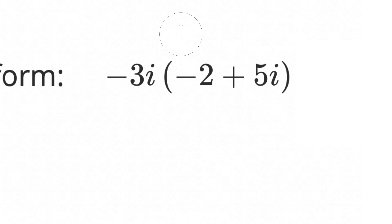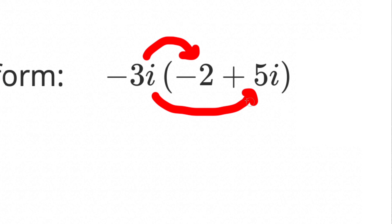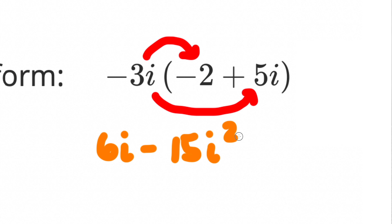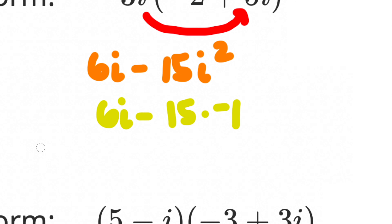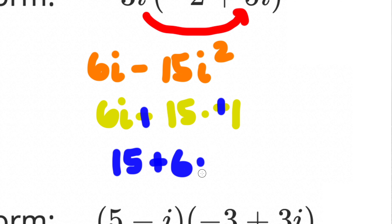The next example involves distributive property, which works the same way for imaginary numbers. Distributing -3i over (5 + 2i) gives -15i - 6i²... wait, distributing gives 6i - 15i². Since i² = -1, -15i² becomes +15. So the final answer is 15 + 6i.